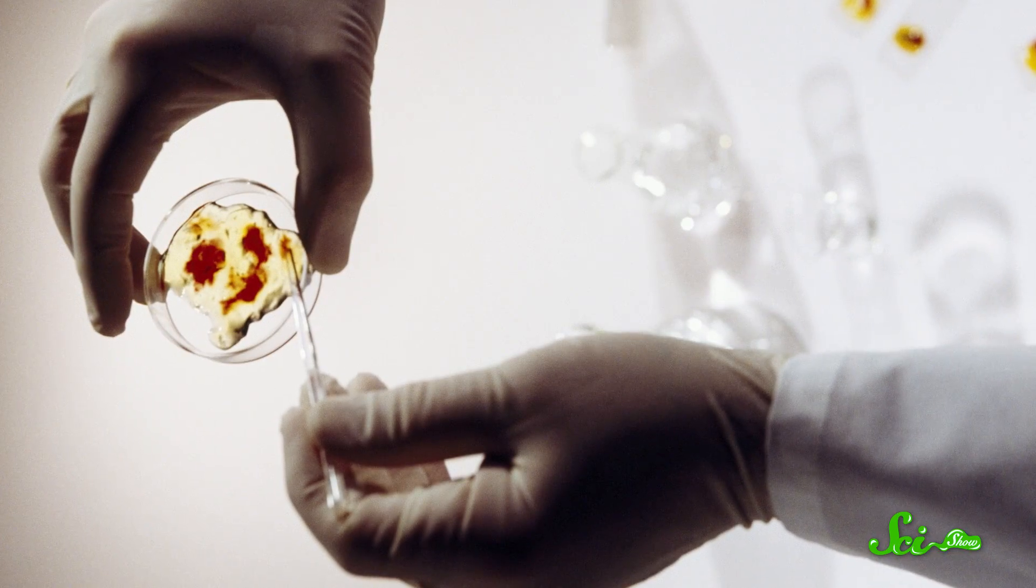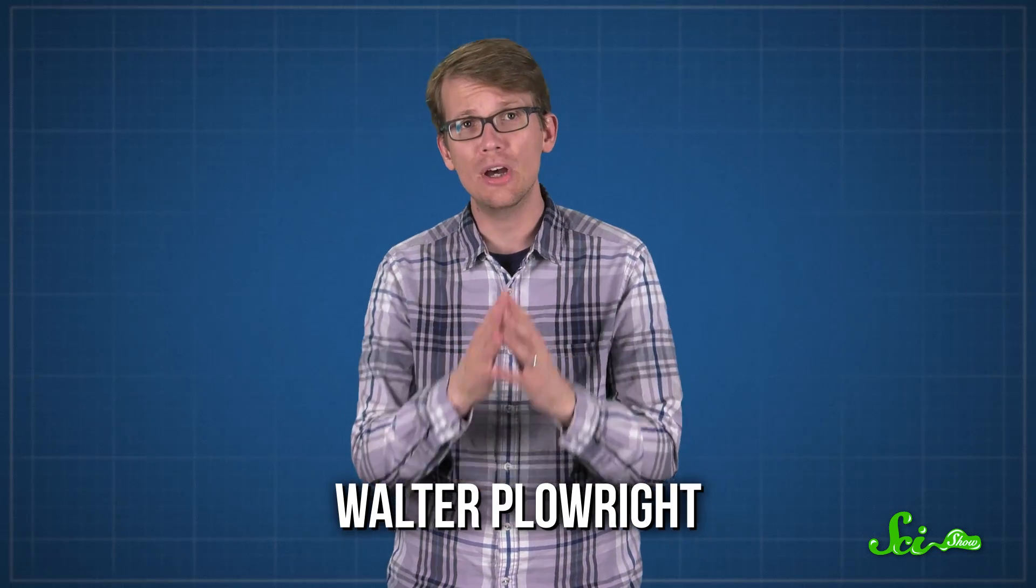By the 1950s, we knew how to grow cells in petri dishes, a technique known as tissue culture. Using time, luck, and serial passage in lab-grown calf kidney cells, vet scientist Walter Plowright developed a new Rinderpest vaccine, riddled with a bunch of weakening mutations. And, best part, no goats necessary.